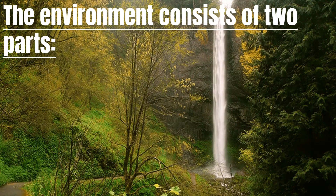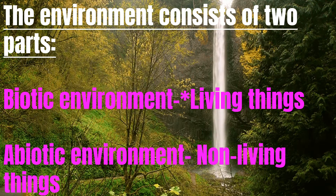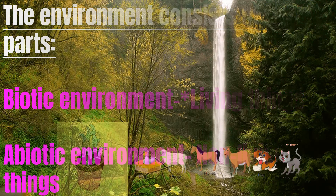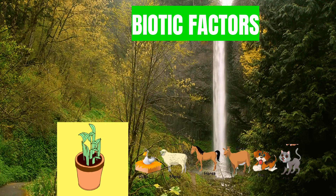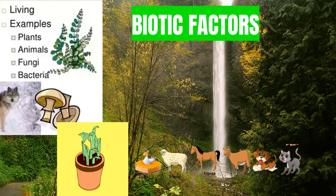The environment consists of two parts. We have the biotic environment, which means living things. Biotic factors are living organisms that shape their environment. Examples of biotic factors are plants, animals, fungi, and bacteria.